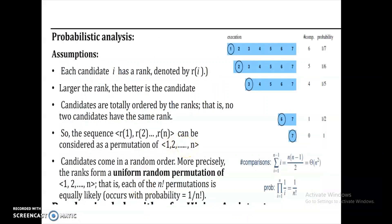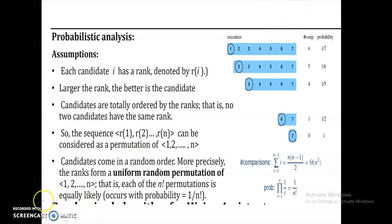Now, analyzing this using probability: each candidate I has a rank denoted by R(I). The larger the rank, the better the candidate. All candidates are ordered by rank, and no two candidates have the same rank — rank 1 is less than rank 2, up to rank N. Candidates come in random order, so there is a uniform random permutation of 1 to N, and each of the N! permutations is equally likely.